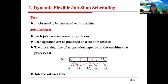First, I will introduce the problem. As in other job-shop scheduling problems, the task here is to process a number of jobs by a set of machines. There are some attributes for the jobs. For example, each job will have a sequence of operations, and each operation can be processed on a set of machines. The processing time of an operation depends on which machine we choose. Further, we consider dynamic events, where jobs can arrive in the job shop over time.